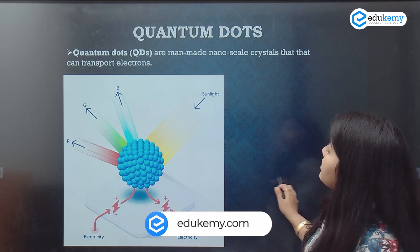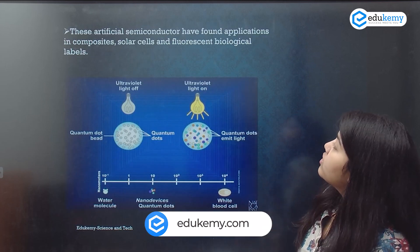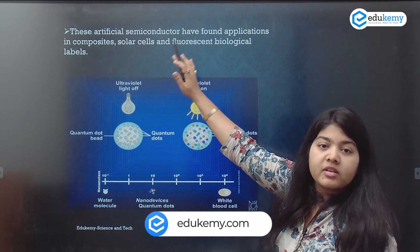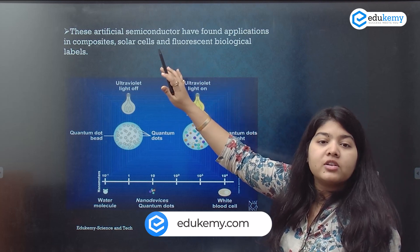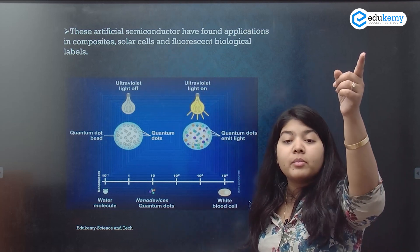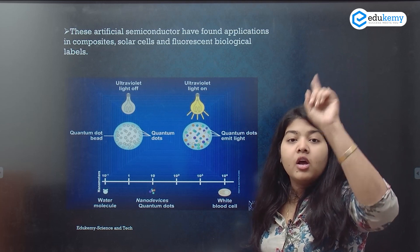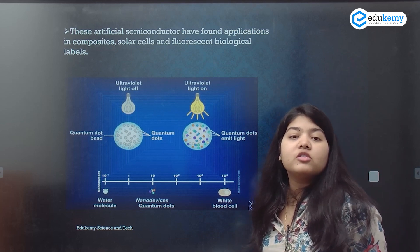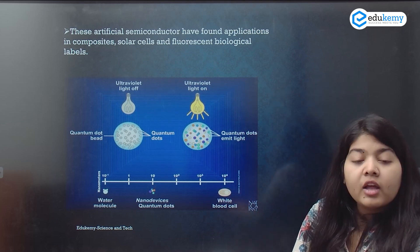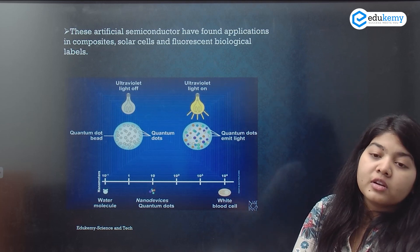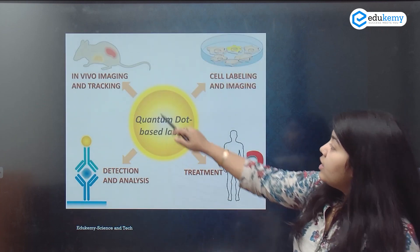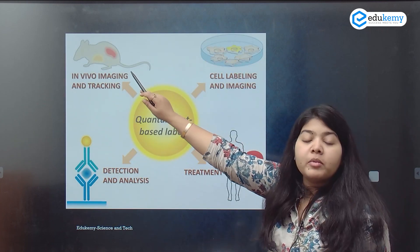Let us see where we use this. These artificial semiconductors have found applications in solar cells — this is where the solar panel comes in. I am using quantum dots in making fluorescent biological labels and in vivo imaging.